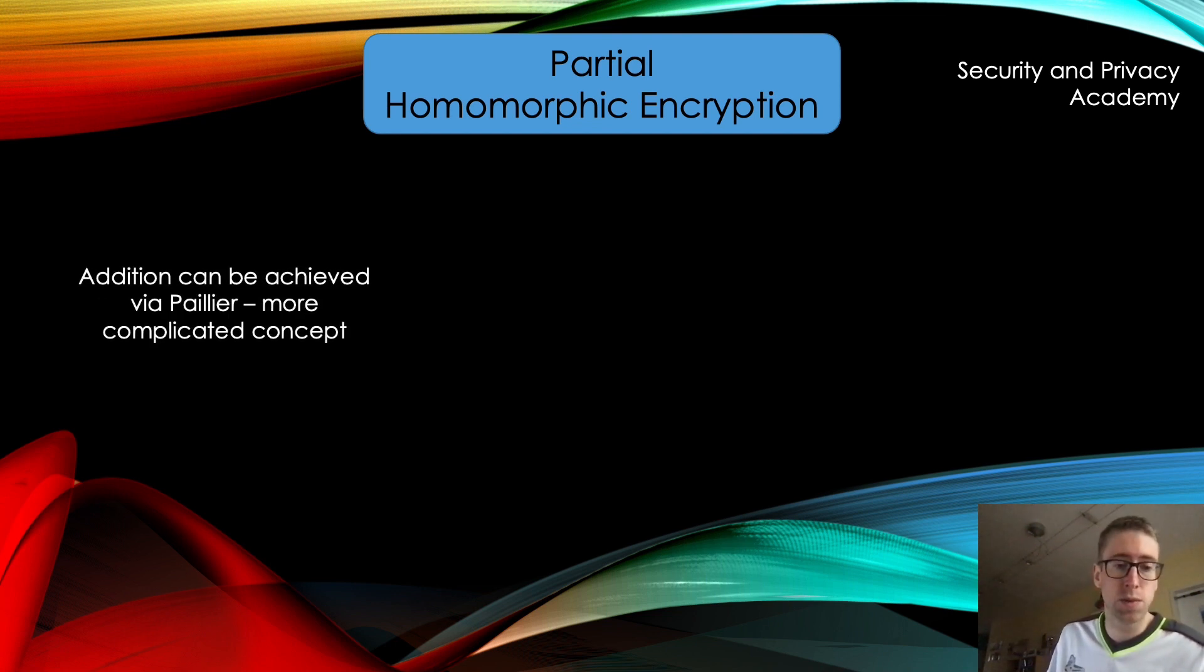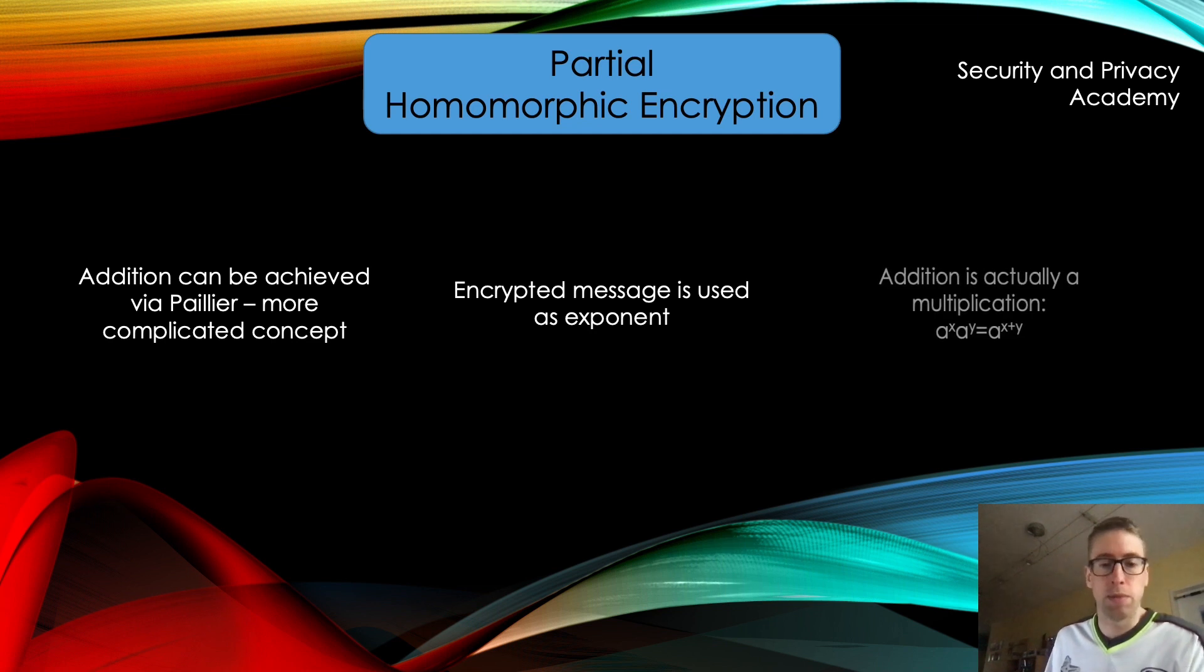However, addition can be achieved via Paillier encryption, which is a much more complicated concept, which I've already touched on earlier. And maybe subject of another video, probably a bit longer than this one, because it's much more complicated than El Gamal. And it works - why does this work? Why can't we add encrypted ciphertext, basically? Why can we do that with Paillier? Because it works by using the encrypted message as an exponent, thereby relaying the problem of addition to the easier to achieve multiplication. As exponents, when they are used in multiplications, are added. As you probably know, but you can also see here in this example of a to the power of x times a to the power of y becomes a to the power of x plus y.